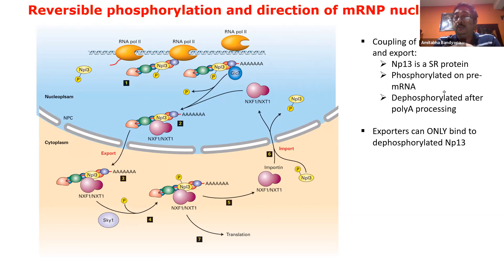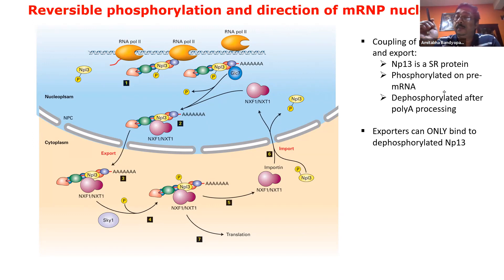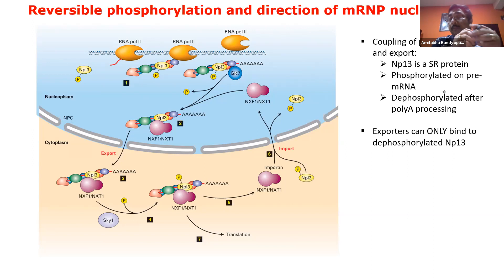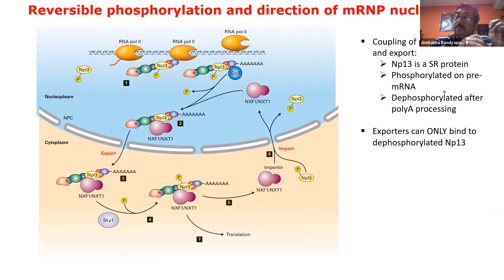As soon as the MRNP comes out into the cytosol, there is another kinase which phosphorylates NPL3 again. Once it is phosphorylated, it ejects the exporter proteins NXF1 and NXT1, which go back to the nucleus, and the MRNP does its job in the cytosol and gets translated. So this is an example of how RNA processing fidelity and the gatekeeping function is coupled with the unidirectional transport of the MRNP. Dephosphorylation of NPL3 is a signal that the MRNP has matured.